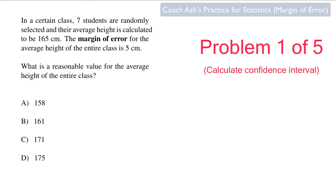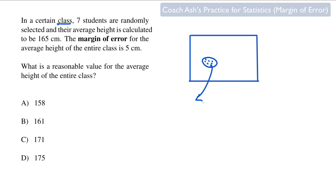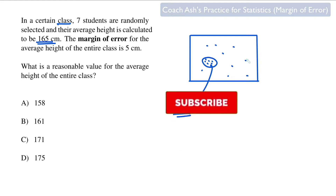To understand margin of error, imagine you've got a certain class of students and seven students are randomly selected. You take the average of their heights and that value is 165 centimeters. Using just this 165 centimeters, you want to estimate the average height of all of the students in the class.